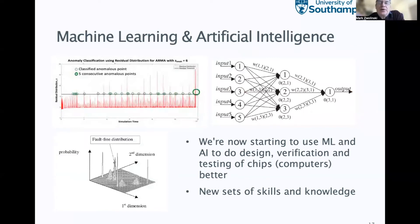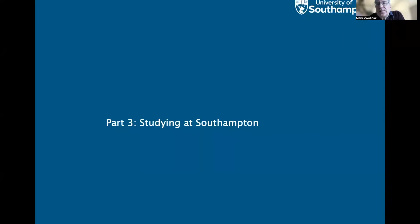Only two days ago I was at a meeting bringing together computer scientists, electronic engineers and so on to talk about exactly these problems — how can we use machine learning and artificial intelligence to help us design and verify computers? Far from computer engineering being a solved problem, it's very much unsolved, because as things get bigger and more complicated, we have to use the technology to check itself.